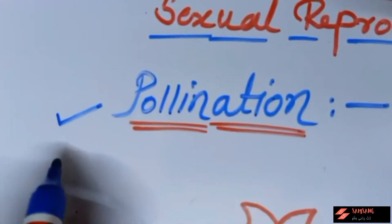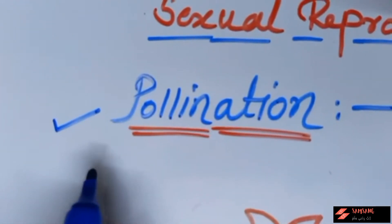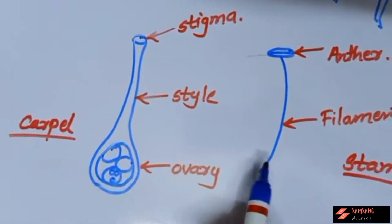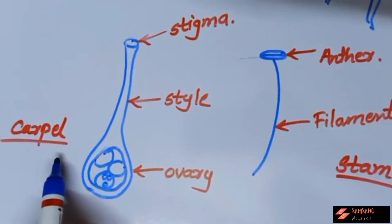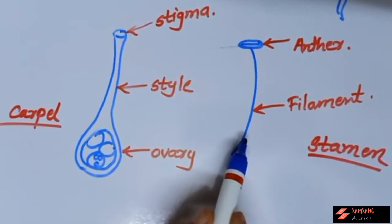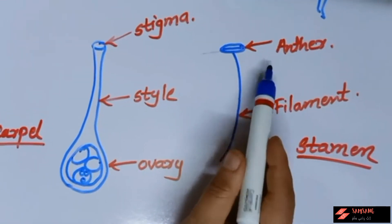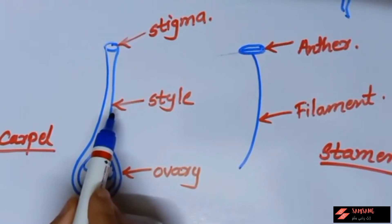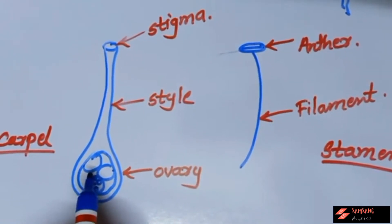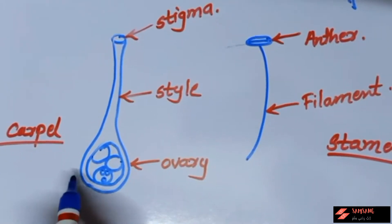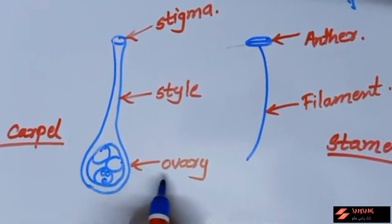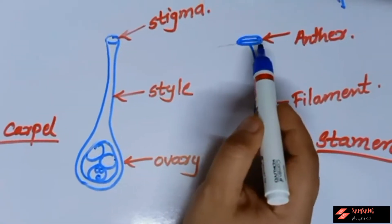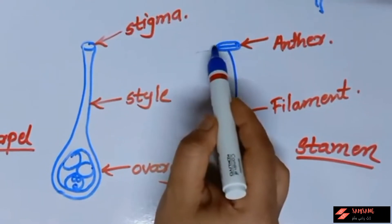The first process in sexual reproduction of a plant is pollination. In a flower, there are two reproductive organs: one is carpel and another is stamen. Carpel is the individual unit of gynoecium and stamen is the individual unit of androecium. In stamen, two parts are there: one is anther and another is filament.